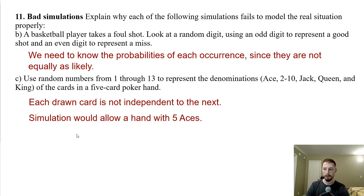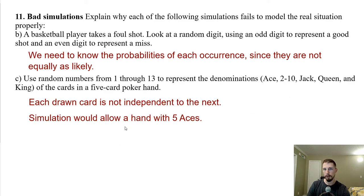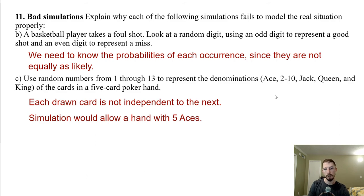Use random integers from one to 13 to represent the denominations — ace, two through ten, jack, queen, king — of a five-card poker hand. The issue is that we're drawing without replacement. If we draw an ace, the probability of drawing another ace goes down because there are fewer aces left in the deck. The simulation would actually allow for a hand of five aces, which isn't even possible in a real deck. Each drawn card is not independent of the next.